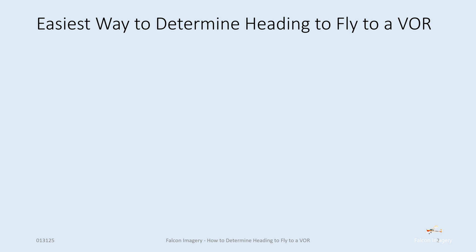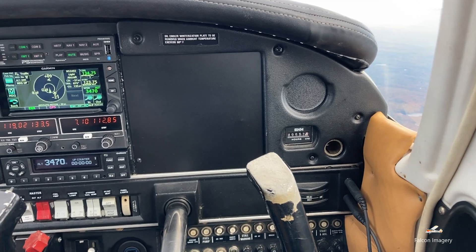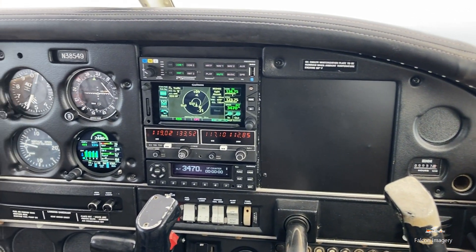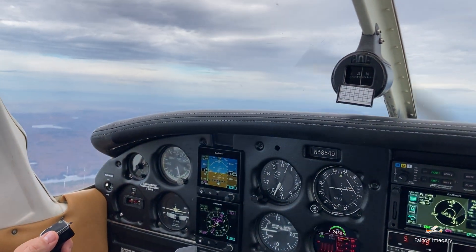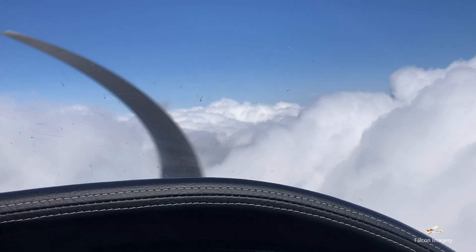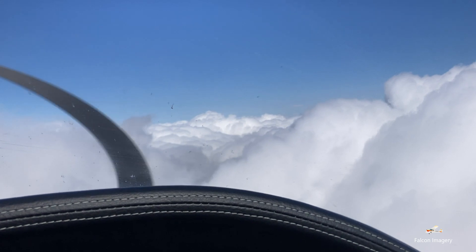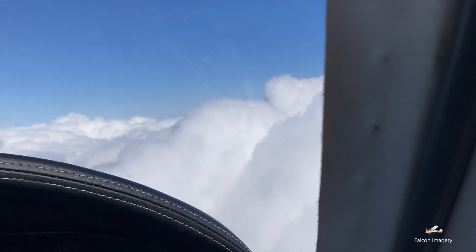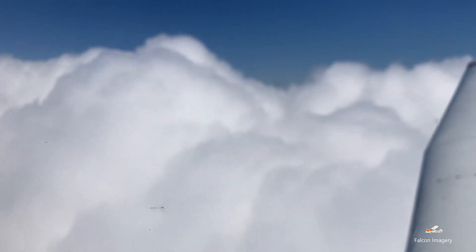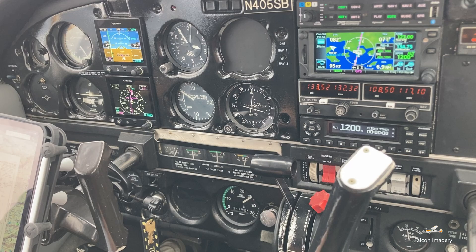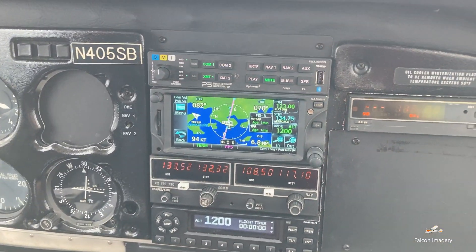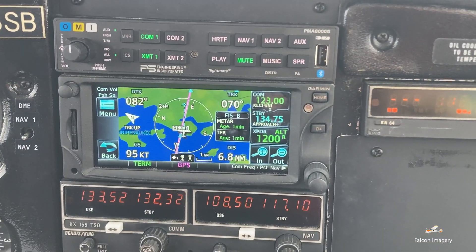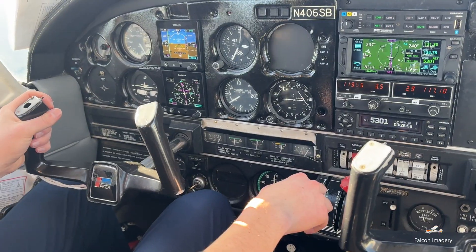Before I get into this, when you're actually in an airplane and you've got a VOR tuned up on your nav radio and you get your CDI, you can easily spin the OBS knob to determine what radial you're on. You just spin the CDI needle until you get a from indication, and then rotate another 180 degrees to a to indication — you know what heading you need to fly, and you just turn your plane in that direction and fly to it.